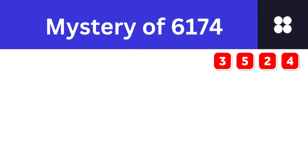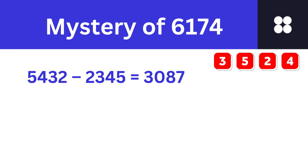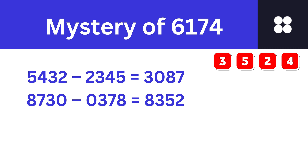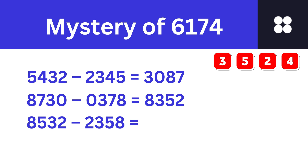Let's look at another example starting with 3524. Arrange this in descending order, you will get 5432. Arrange this number in ascending order, you will get 2345. Subtract the smaller one from the bigger number — you are getting 3087. Arrange 3087 in ascending and descending orders and subtract the smaller number from the bigger number — we get 8352.